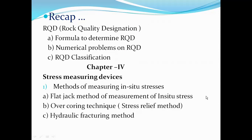The first is the flat jack method of measuring in-situ stress, also known as the stress restoration method. In this method, two points are marked on the face by means of pins, the distance between them is measured accurately, and a slot is driven between the two points P and Q to a certain depth. Due to the disturbance in the in-situ state of stresses, the slot tries to close, reducing the distance between the two points.